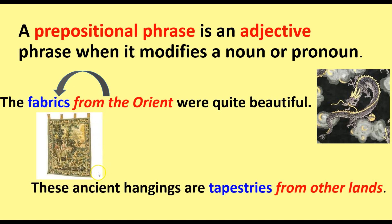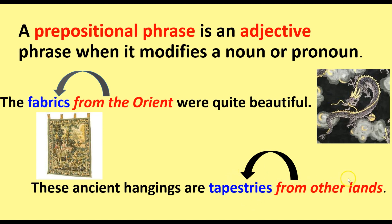Another example: 'These ancient hangings are tapestries from other lands.' From other lands is our prepositional phrase. It is telling us about tapestries — which tapestries we're talking about — and tapestries is our predicate noun in the sentence. So our prepositional phrase is acting as an adjective, modifying the noun.